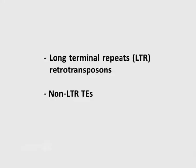Class 1 elements, also known as retrotransposons, form the major portion of the human genome and move through the action of RNA intermediates. They use reverse transcriptase to reverse transcribe RNA sequences into DNA, which is then inserted into the target site. There are two major types of class 1 transposable elements: the long terminal repeats or LTR retrotransposons, and the non-LTR transposable elements.